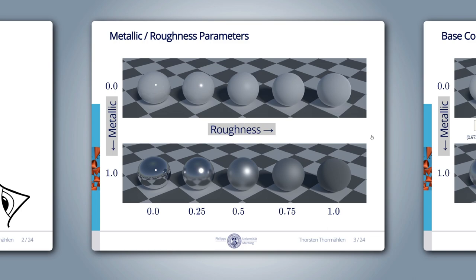For metals such as gold, silver, copper and so on, the metallic parameter is 1. For dielectric materials, which are also called nonmetals, such as plastic, wood and rubber, the metallic parameter is 0.